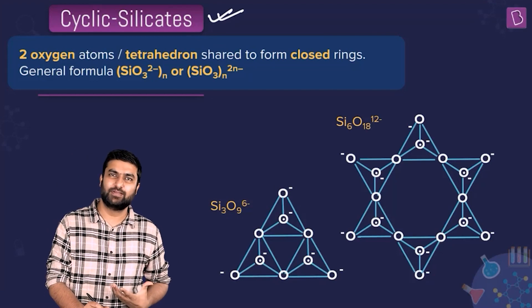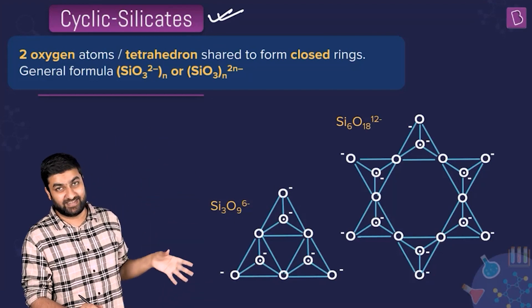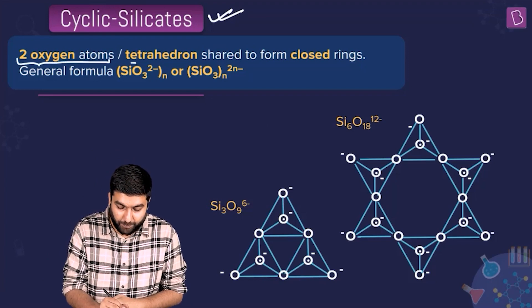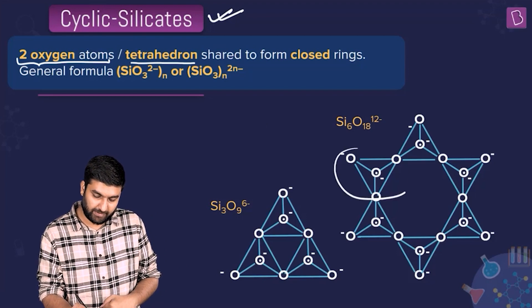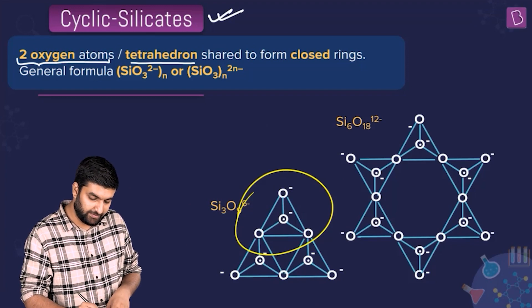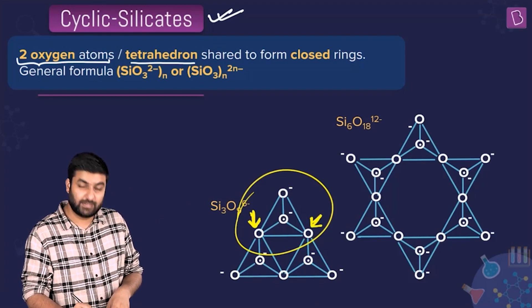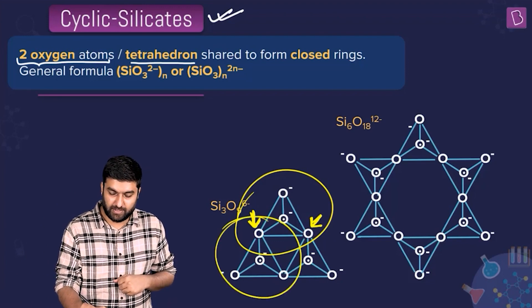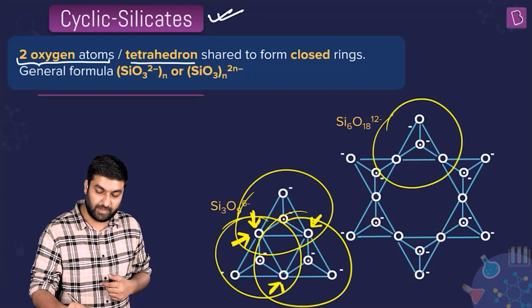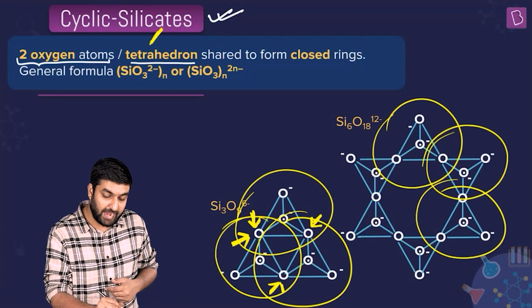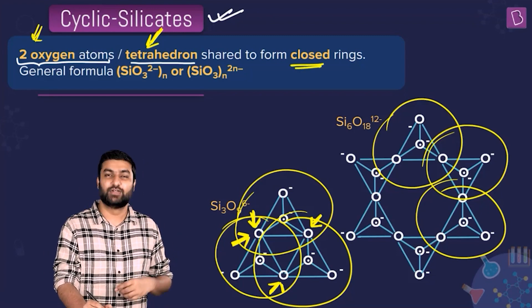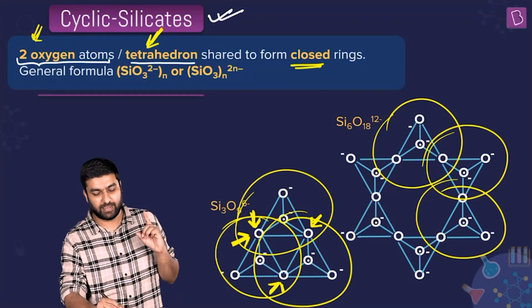Cyclic silicates — let's read the diagram carefully: two oxygen atoms per tetrahedron are shared. This is a tetrahedron, and if you take a close look, you will realize that this oxygen and this oxygen is shared. The same is the case with any of the units here. Per tetrahedron, two oxygen atoms are shared, and they get shared to form closed rings.